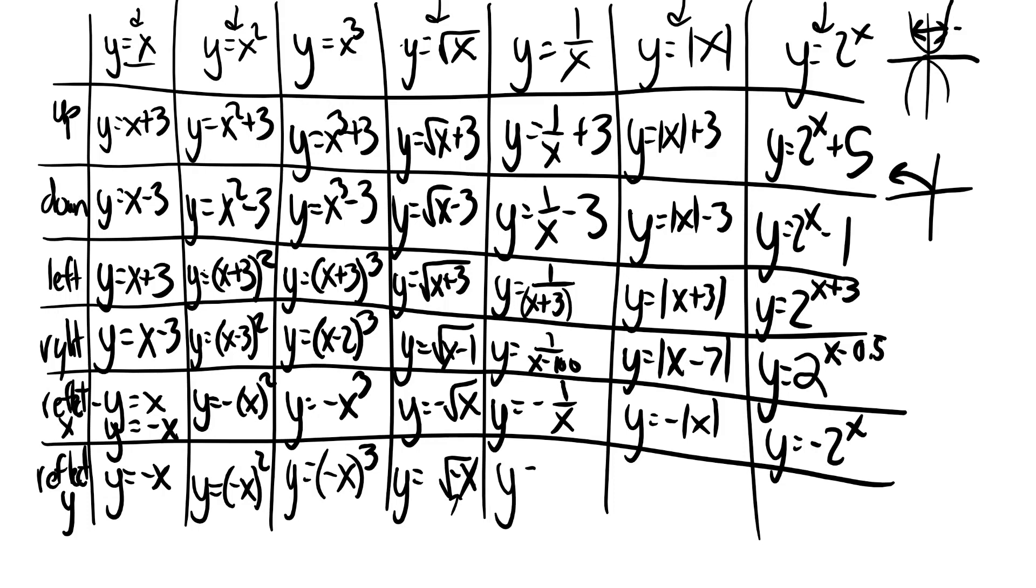Next one, y equals 1 over negative x. Y equals the absolute value of negative x. And, y equals 2 to the negative x power. This one also looks significantly different. Instead of a normal exponential graph that's going up, it's an exponential graph that is completely inverted and on the other side. So, they look totally different.